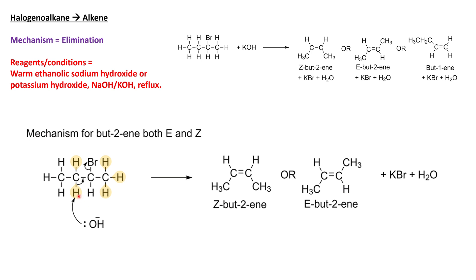Looking back at this mechanism: because I deprotonated this hydrogen here, the electrons moved into the bond between the two middle carbons — hence I got bute-2-ene. If I deprotonated an end hydrogen instead, those electrons would move between the two end carbons and you'd end up with bute-1-ene. So it's important to select the correct hydrogen to form the correct position isomer. To be clear: the two bute-2-ene products are EZ geometric stereoisomers of each other, whereas comparing either bute-2-ene with bute-1-ene gives position isomers — a type of structural isomerism.